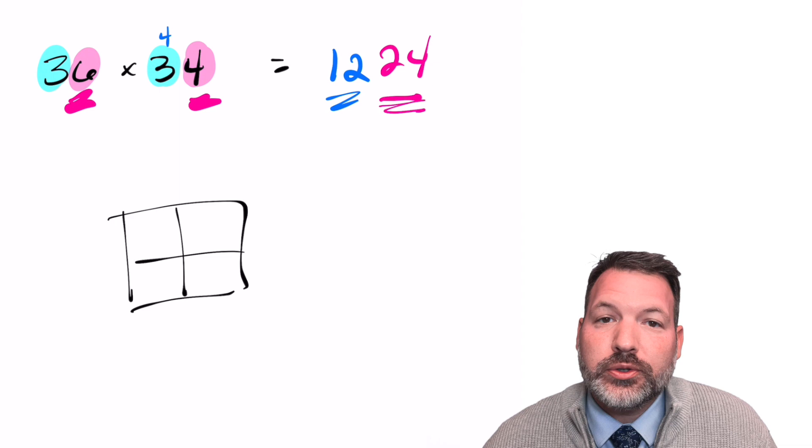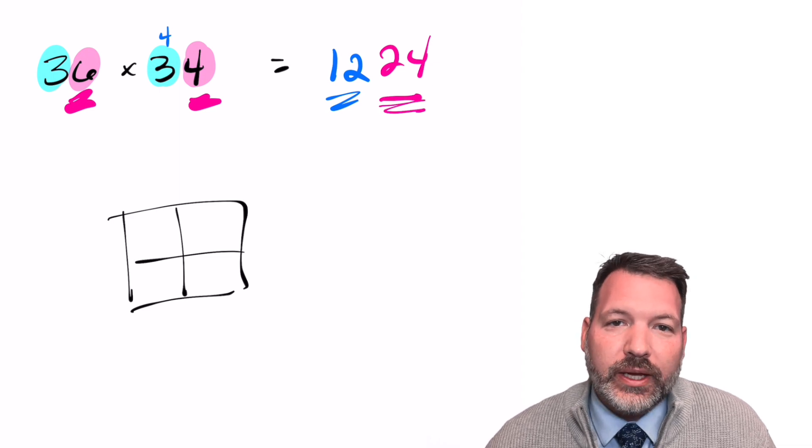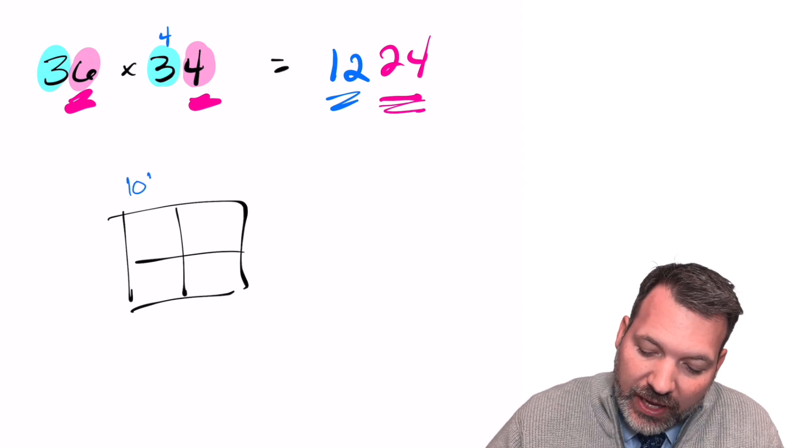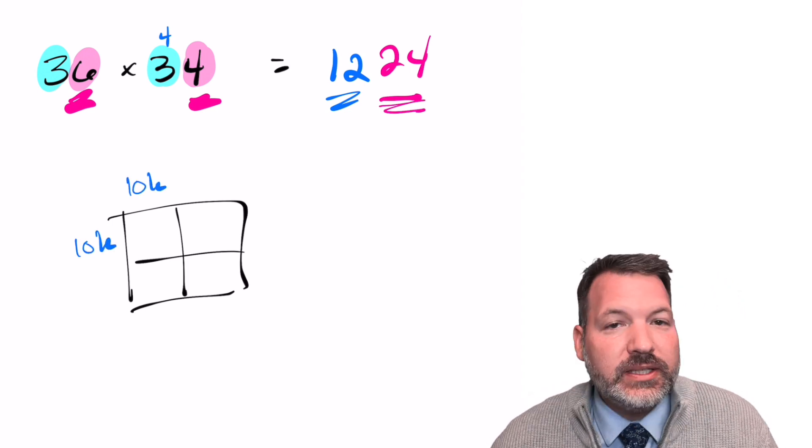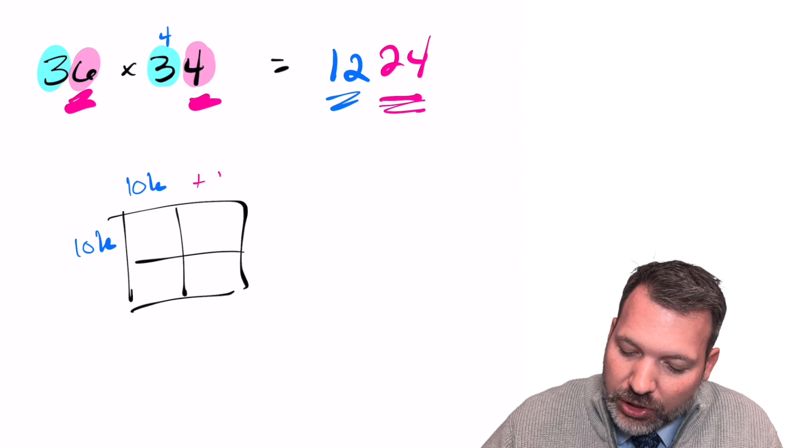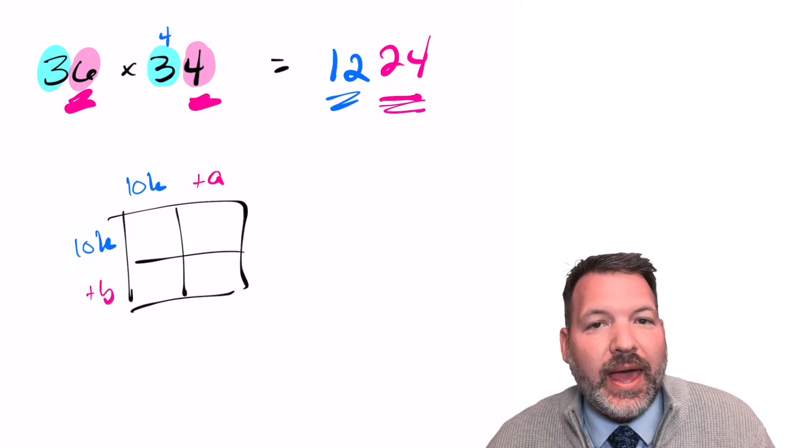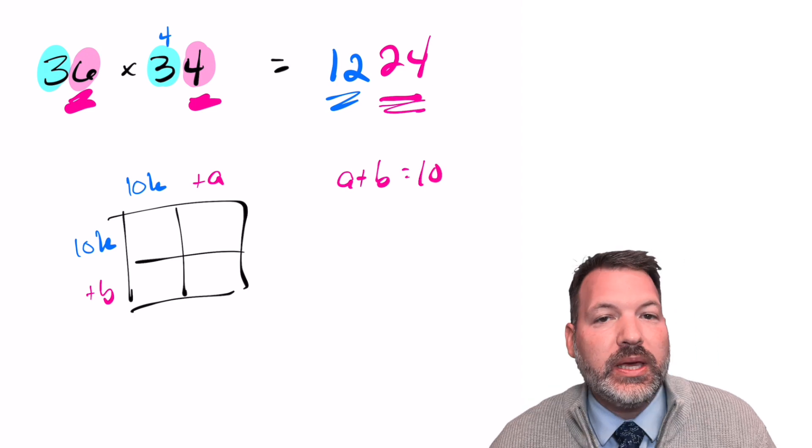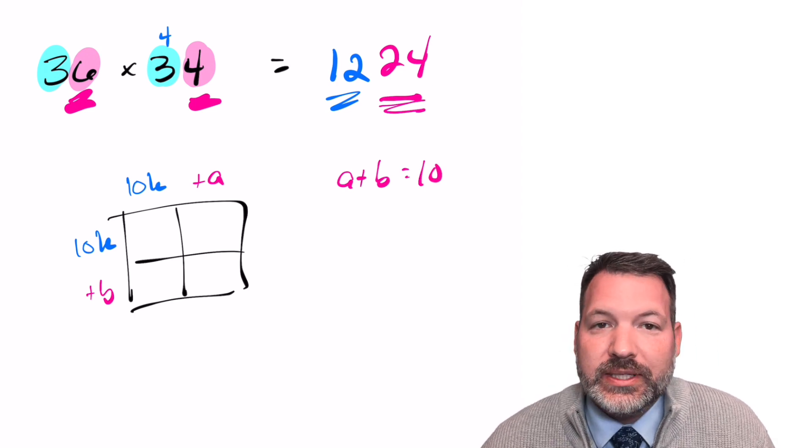To push this even further, let's try to write this even more generally, not 30 plus six or 30 plus four, but instead some generic tens digit, which I'll represent as 10 times k, and then some generic set of ones digits, a and b, where again, we know for sure that a plus b is 10, the ones digits add up to 10.